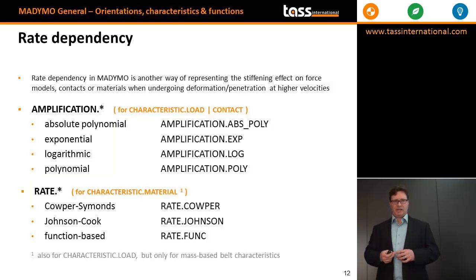Rate dependency in a Madimob model can be modeled with two different keywords. One is the amplification keyword, which is used for characteristic.load and characteristic.contact, and the other one is the rate keyword, which is mostly used for characteristic.material.